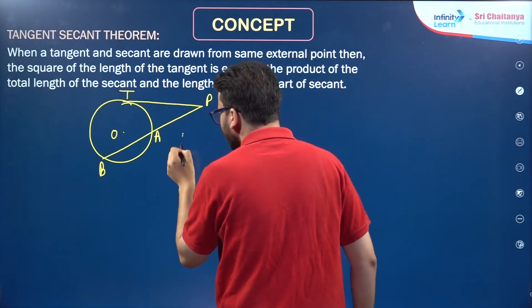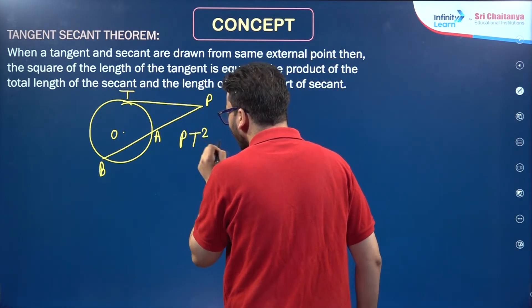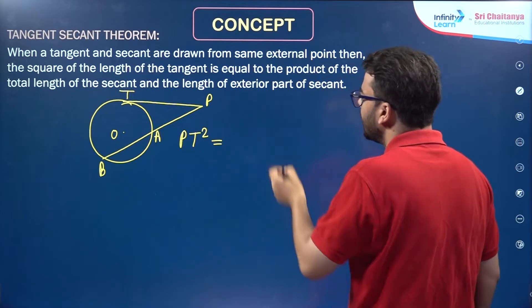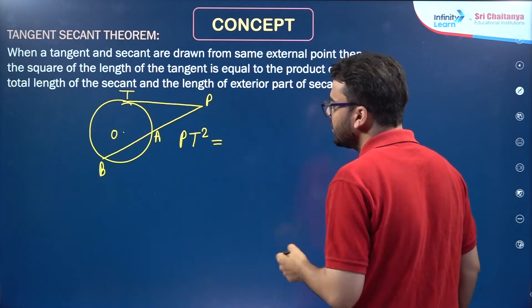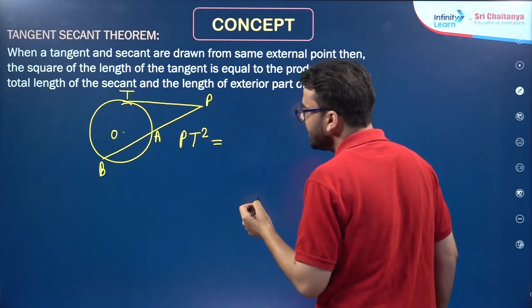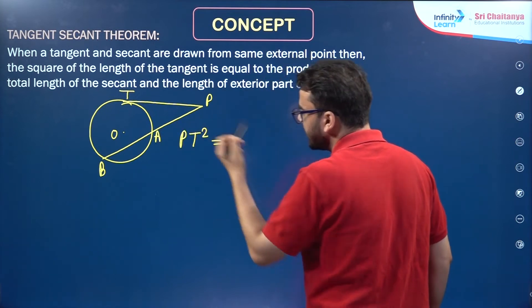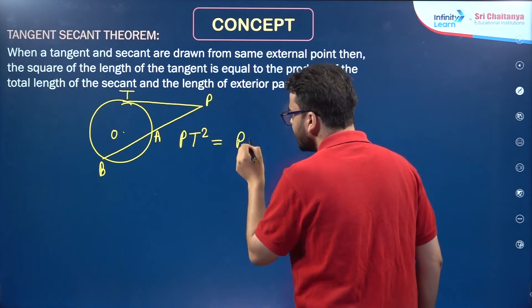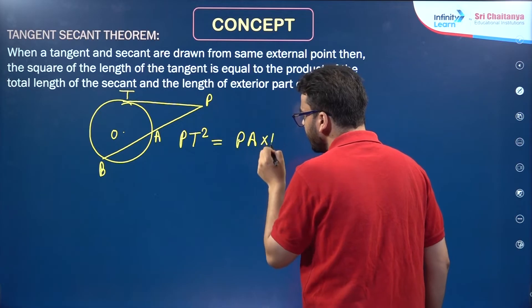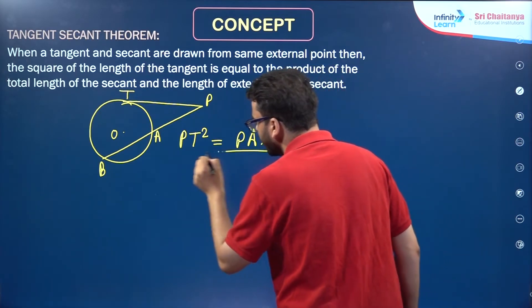As per the tangent secant theorem, the square of the length of the tangent, PT², is equal to the product of the total length of the secant PB and the external part of the secant PA. So PT² = PA × PB. This is the tangent secant theorem.